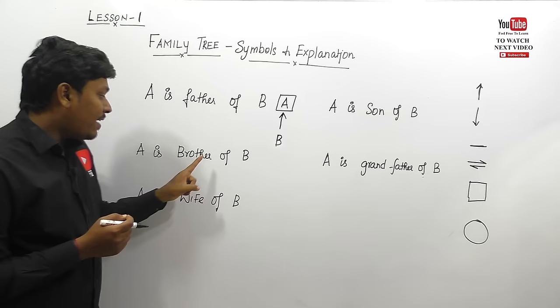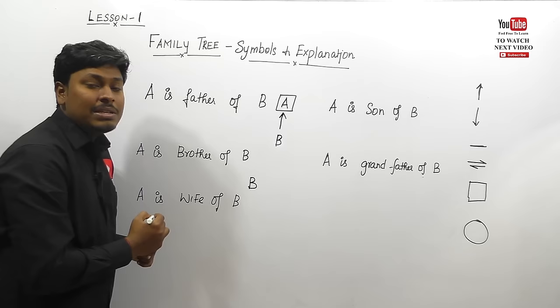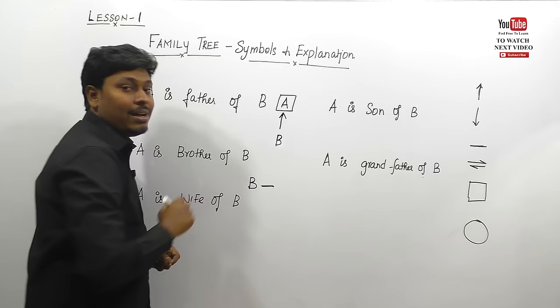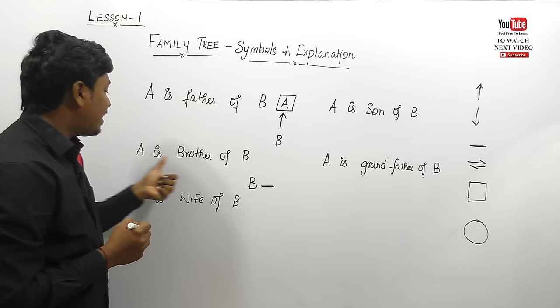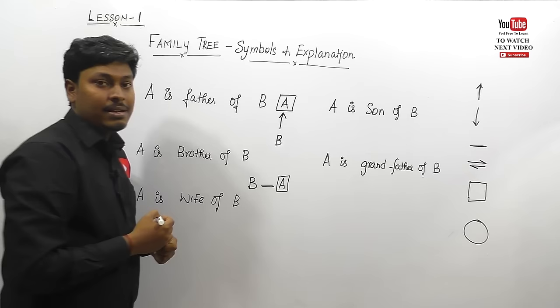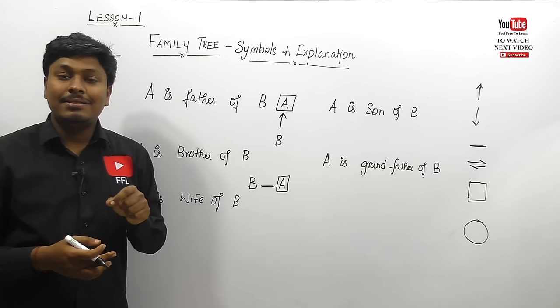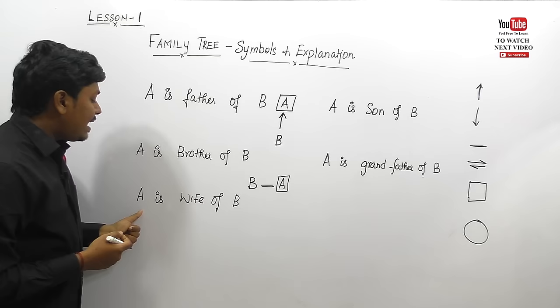A is brother of B — B is having a brother A. Brother-sister relation is zero generation. If it is zero generation, we use a line. A line denotes zero generation and an arrow mark denotes one generation. Since A is a brother, A is definitely a male person. We don't know the gender of B, but we denote A by a box connected with a line.